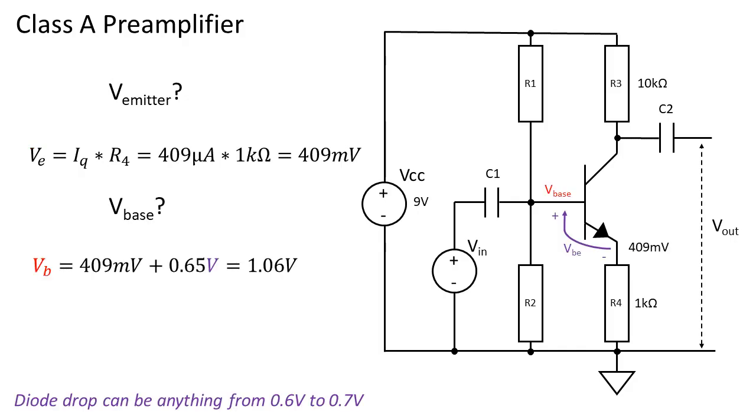Now for the next step we calculate the voltage at the base. Because the difference between the emitter and the base of the transistor is equal to one diode drop, we can simply add 0.65 volts to the emitter voltage. This results in a base voltage of about 1.06 volts.